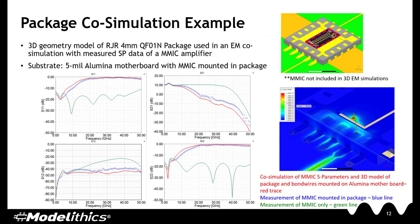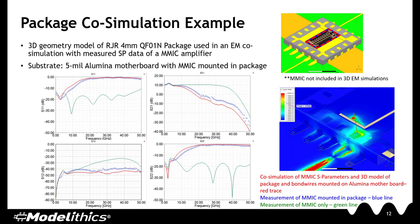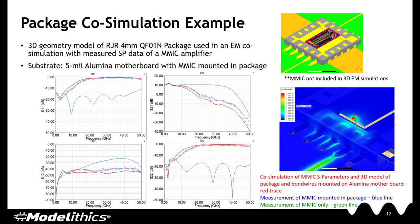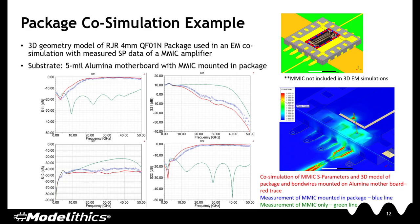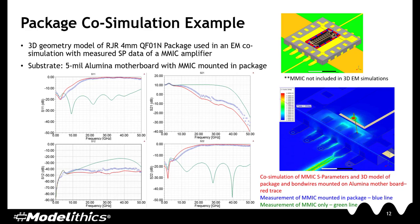In our final example, a co-simulation combining a 3D simulation of a QFN package mounted on an aluminum motherboard, as well as measurement data of a MIMIC amplifier, is shown. The green trace shows a measurement of the MIMIC amplifier in isolation — no bond wires or packaging included. The blue symbols show a measurement of the MIMIC mounted inside of the QFN package. The red trace shows the result of the 3D co-simulation of the package, bond wires, motherboard, as well as the S-parameter data of the MIMIC in isolation.